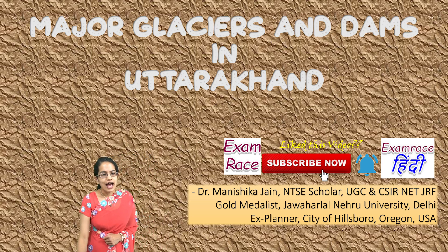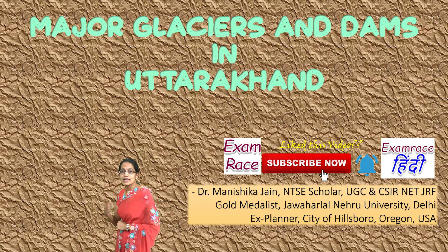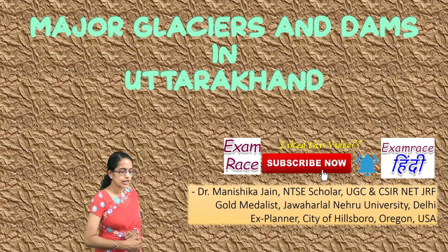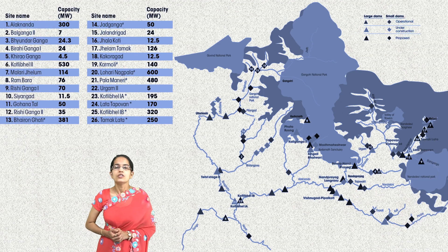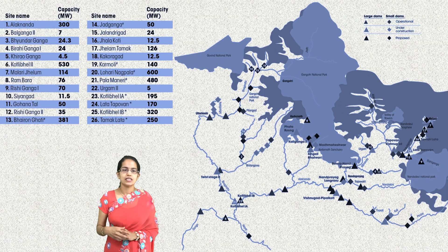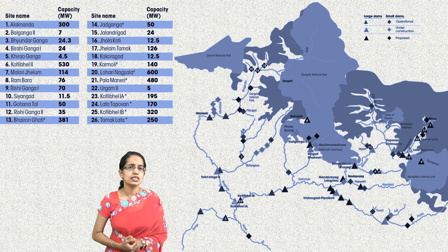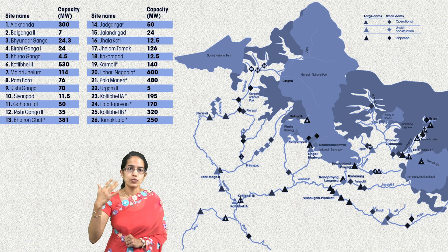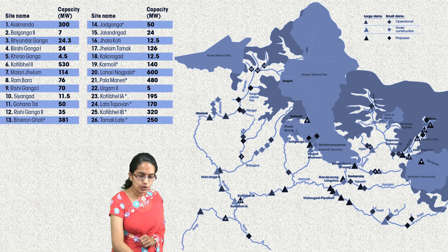Major glaciers and dams in Uttarakhand. This has been a very important topic in light of the recent Chamoli disaster and the flash flood we have witnessed. In this section we will understand some of the major national parks located in the region of the Alaknanda and Bhagirathi before they join the Ganga river, and what are the major dams and where they are located.